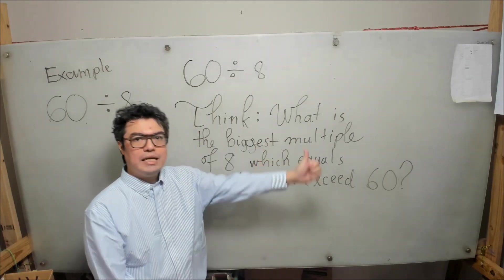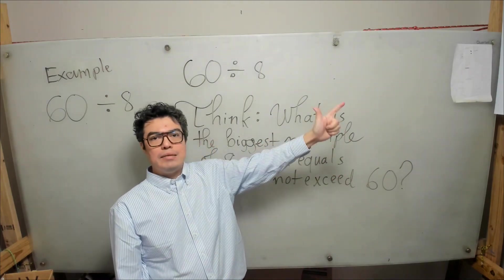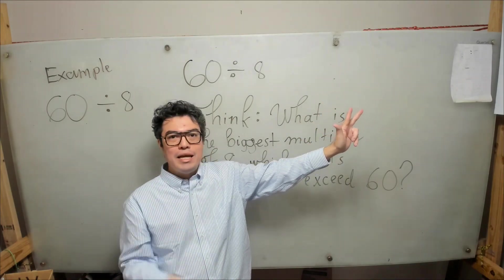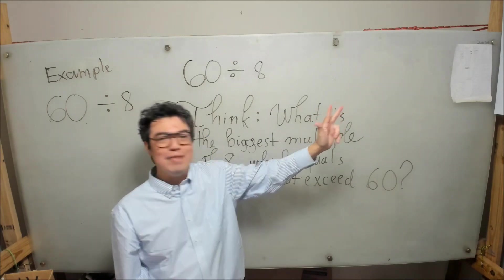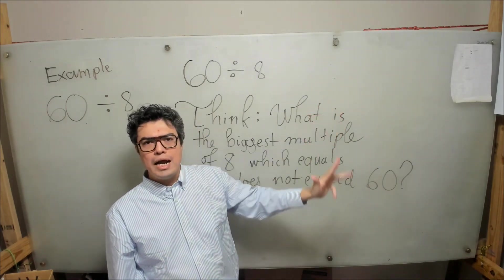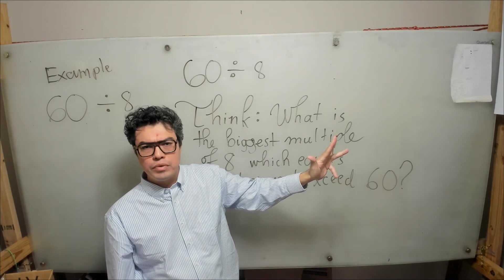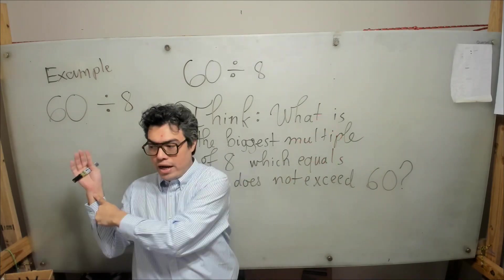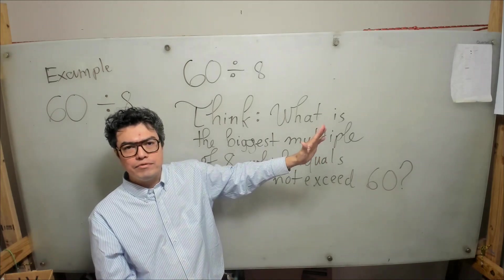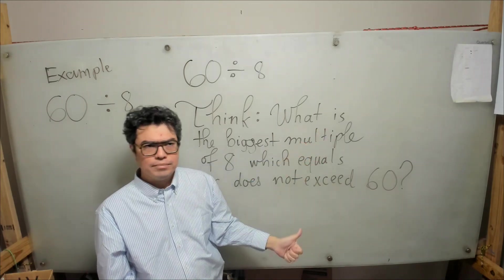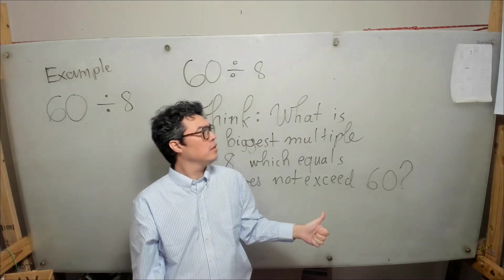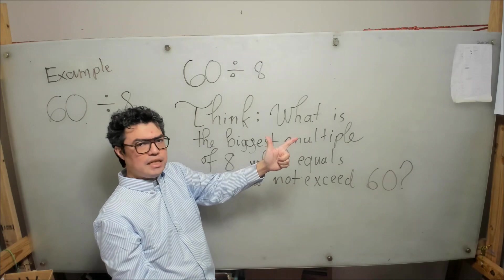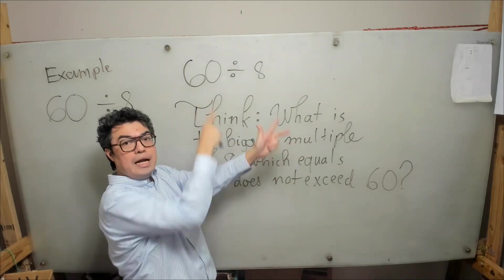Let's do it together. 8 times 1 is 8, 8 times 2 is 16, 8 times 3 is 24, 8 times 4 is 32, 8 times 5 is 40, 8 times 6 is 48, 8 times 7 is 56 — we're getting close — and 8 times 8 is 64.